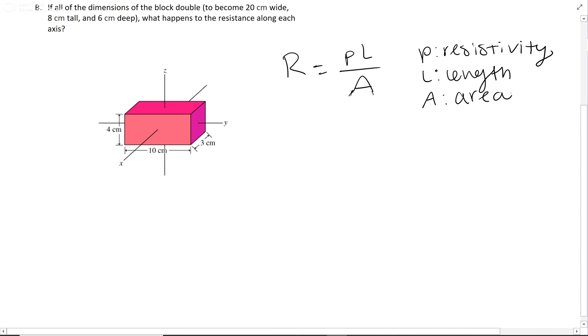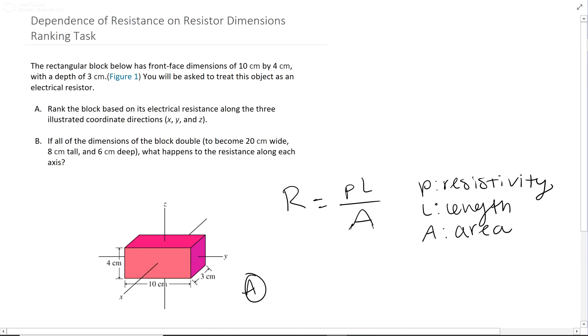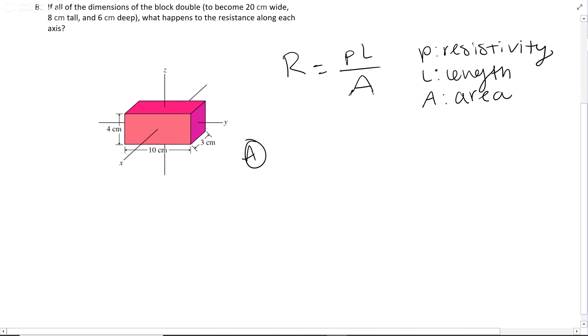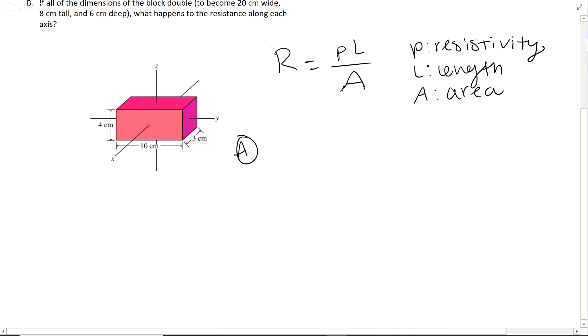So for A, if we're ranking the electrical resistance, we're actually ranking R, not ρ, even though that is resistivity. So what we're going to see is the larger the area, the smaller the resistance is going to be.